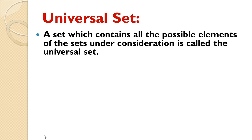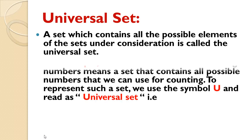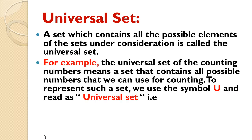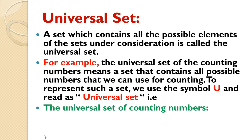Universal Set — Definition: A set which contains all the possible elements of the sets under consideration is called the Universal Set. For example, the Universal Set of counting numbers means a set that contains all possible numbers that we can use for counting. To represent such a set, we use the symbol U. The Universal Set of counting numbers: U = {1, 2, 3, ...}.